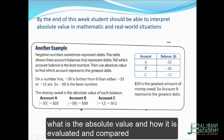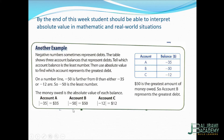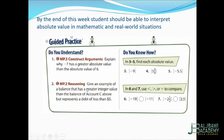The first part asks: which account balance is the least number? The least number has the greatest absolute value. On a number line, negative 50 is further from zero than either negative 35 or negative 12. So negative 50 is the least number because it is the furthest from zero.